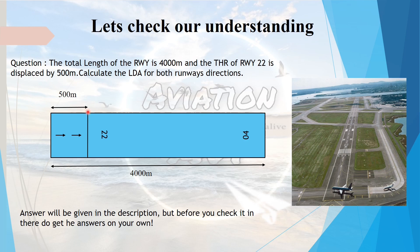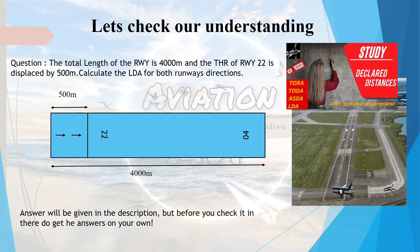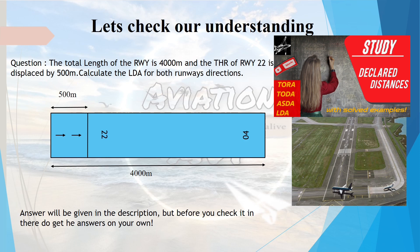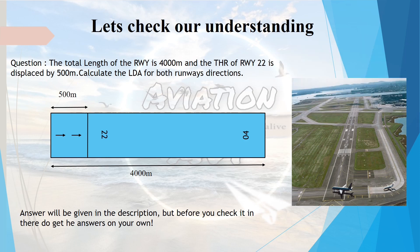Now let us check our understanding. Consider runway 22/04, which has a total length of 4,000 meters. Since we have displaced the threshold by 500 meters for runway 22, the landing distance available for runway 22 decreases. Calculate this distance and comment your answer below — the answer will be given in the description. To help with this calculation, refer to our video on declared distances, the link of which will be in the description.